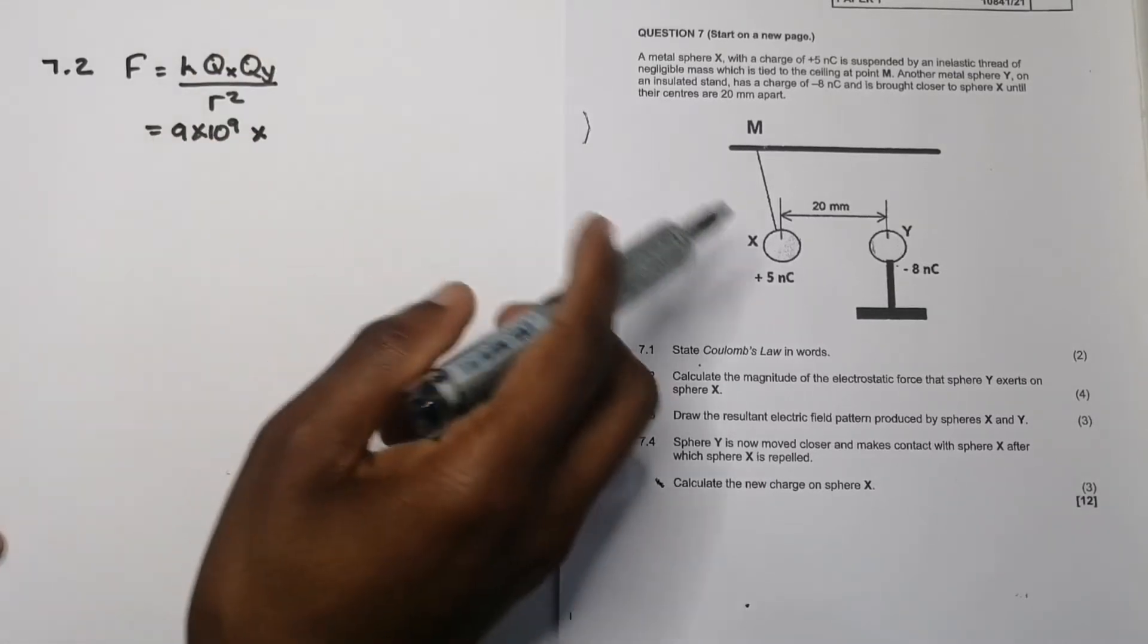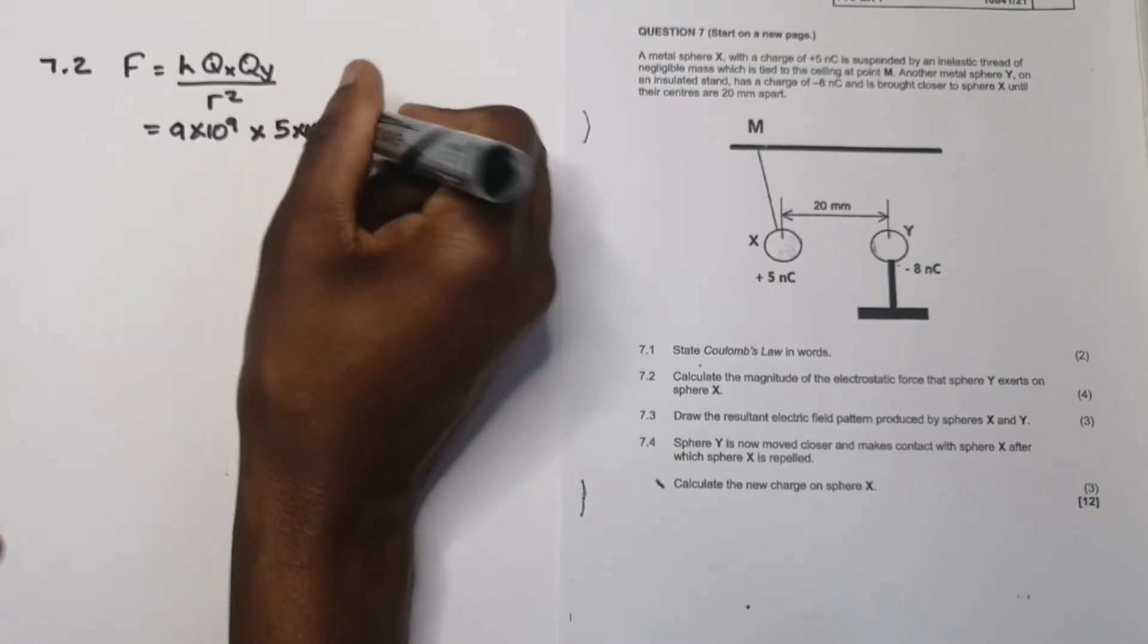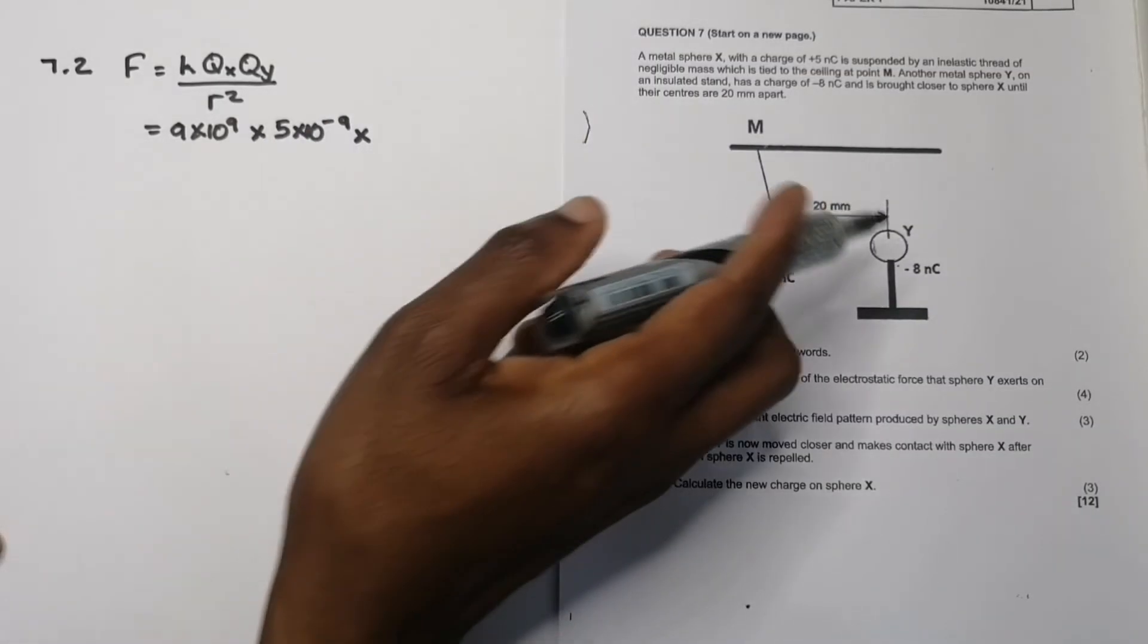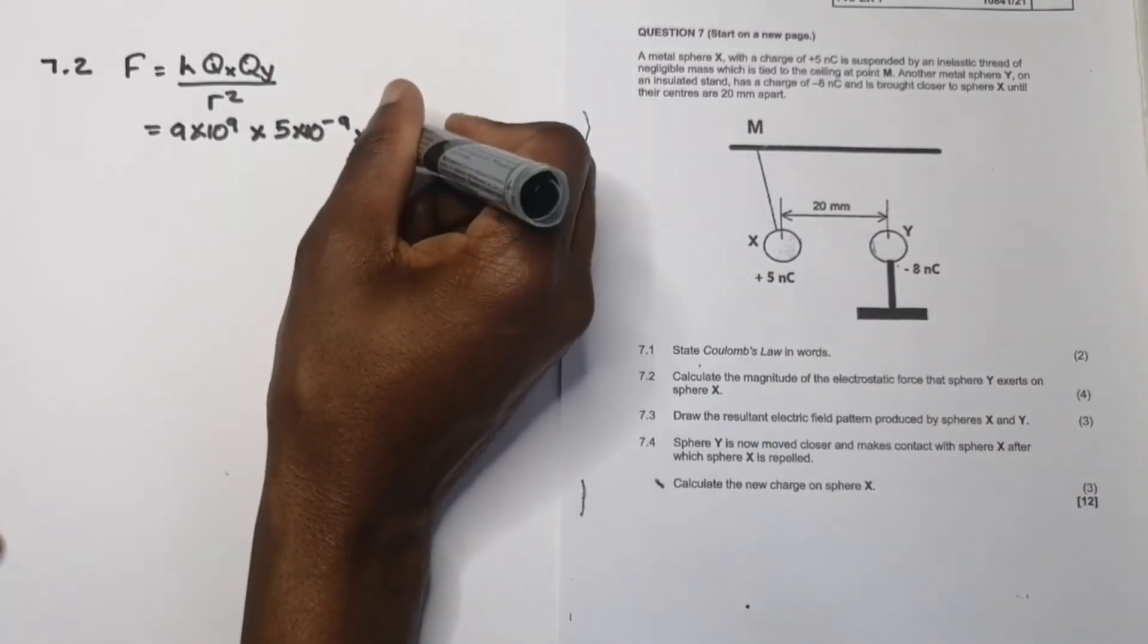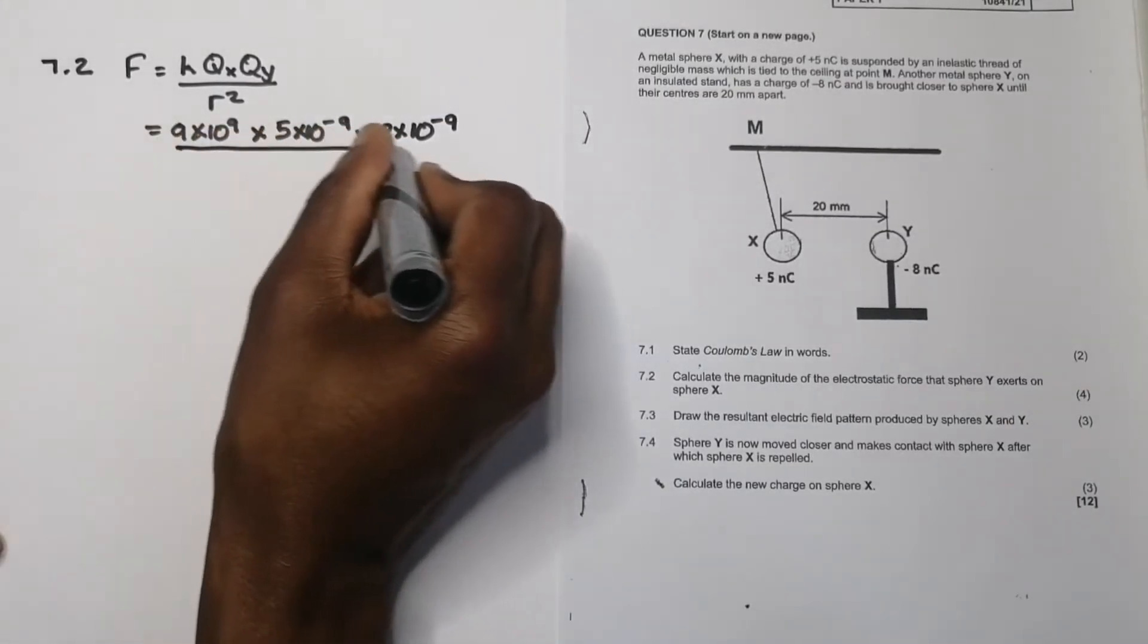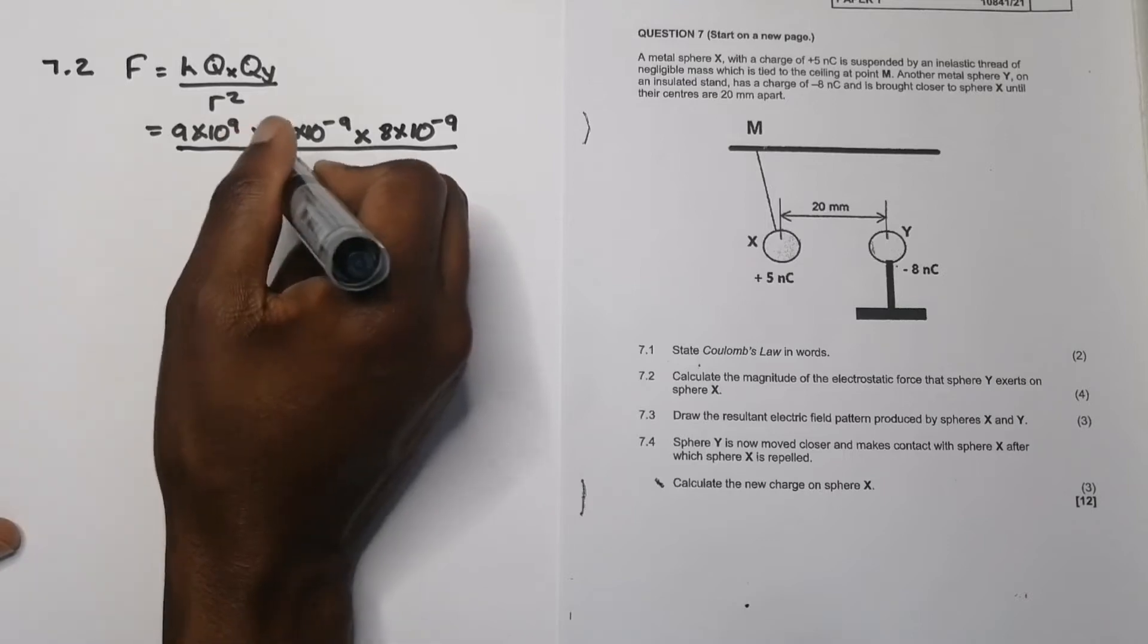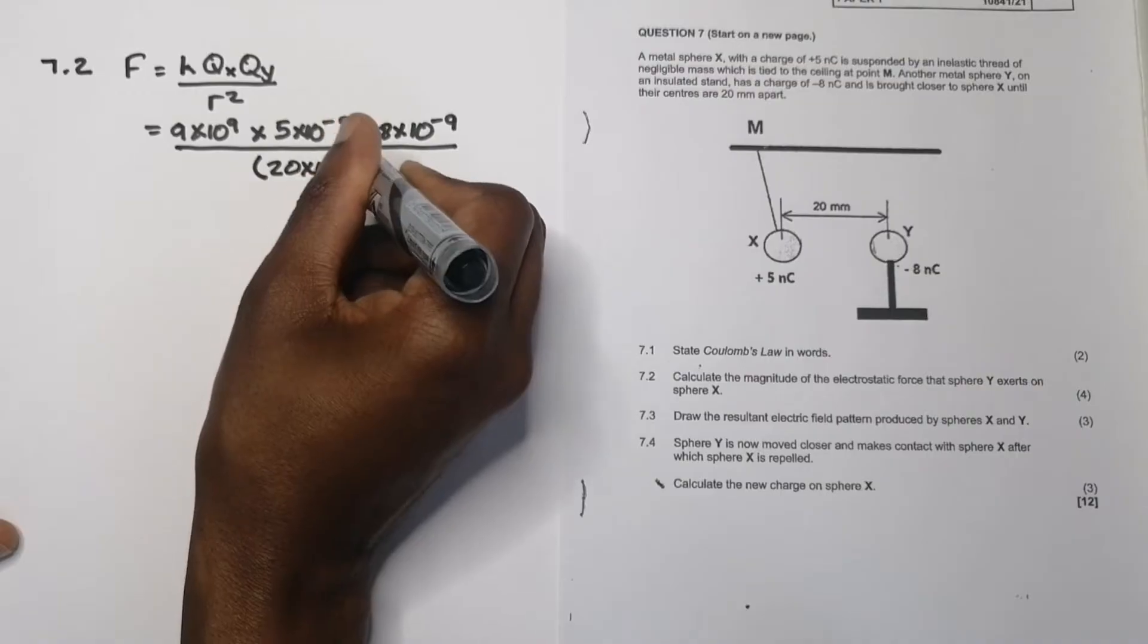All we do is substitute. So this is 9 times 10 to the power 9, multiplied by the charge of X, that would be 5 times 10 to the minus 9, and 8 times 10 to the minus 9. And please note, I am only substituting the absolute value of my charges. The only thing I use the sign for is to determine the direction of my force. So divided by the distance between them, that's 20 times 10 minus 3.